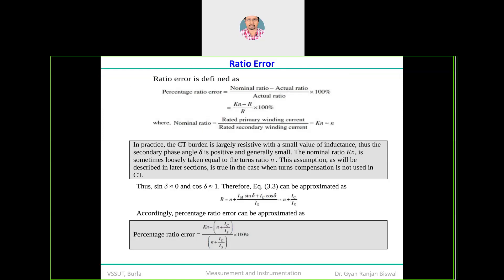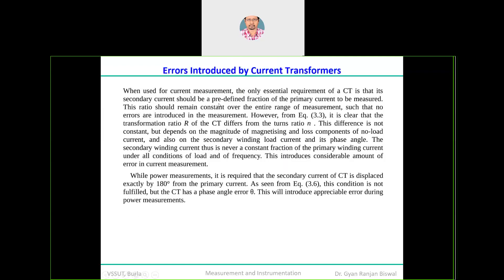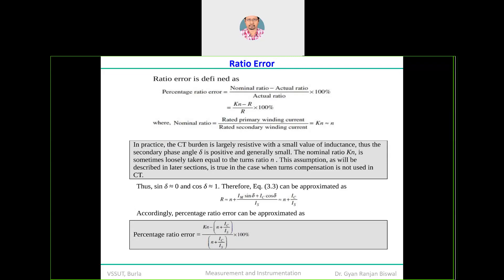There are two different kinds of errors: ratio error and phase angle error. For ratio error, since sin(δ) → 0 and cos(δ) → 1, the transformation ratio R = N + (IC / IS). Substituting this gives the percentage ratio error. For phase angle error, substituting from equation 3.6: theta ≈ (180/π) × [IM·cos(δ) − IC·sin(δ)] / (N·IS). With sin(δ) → 0 and cos(δ) → 1, theta ≈ (180/π) × (IM / N·IS) degrees. These equations can be used directly to calculate numerical values.